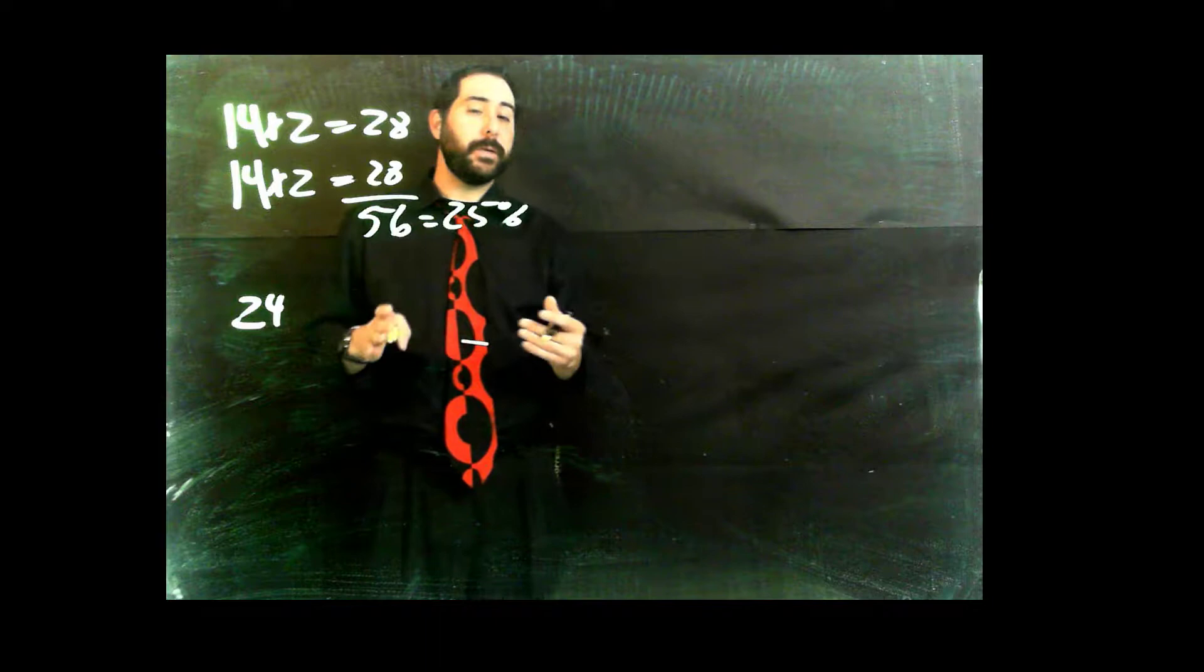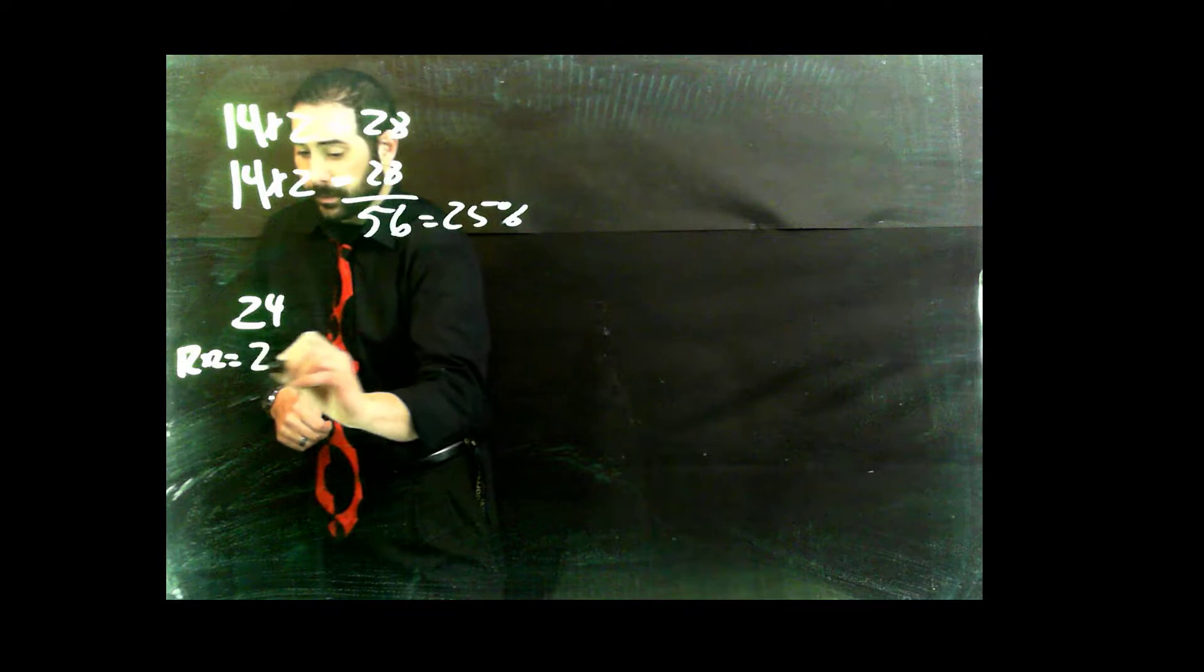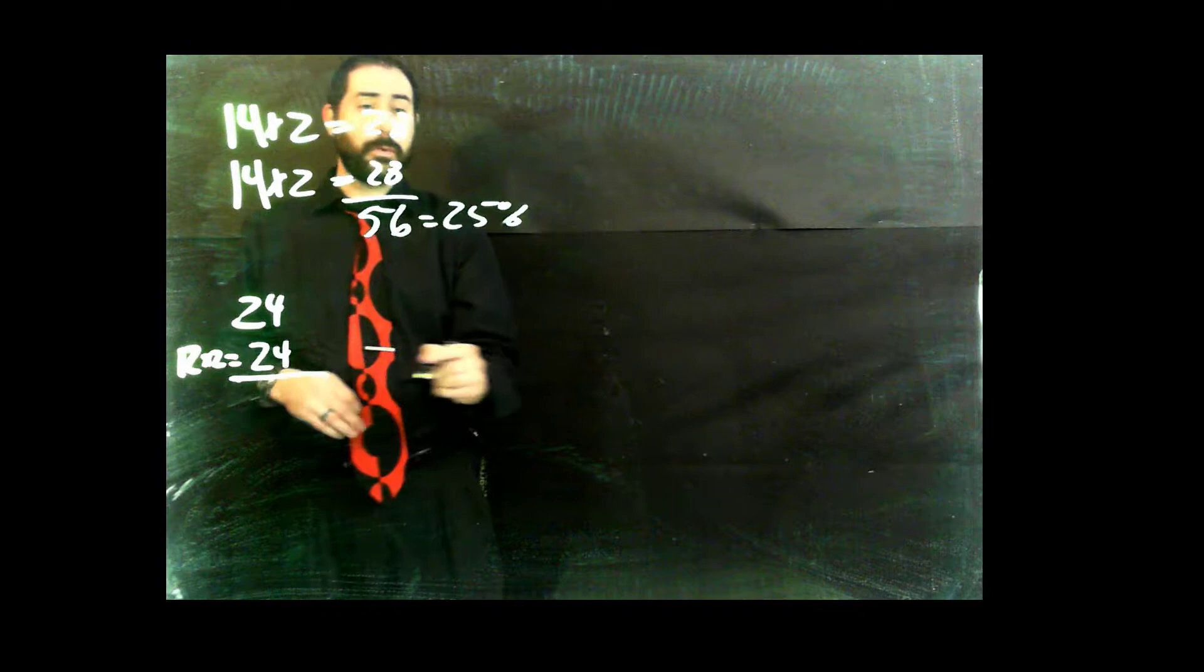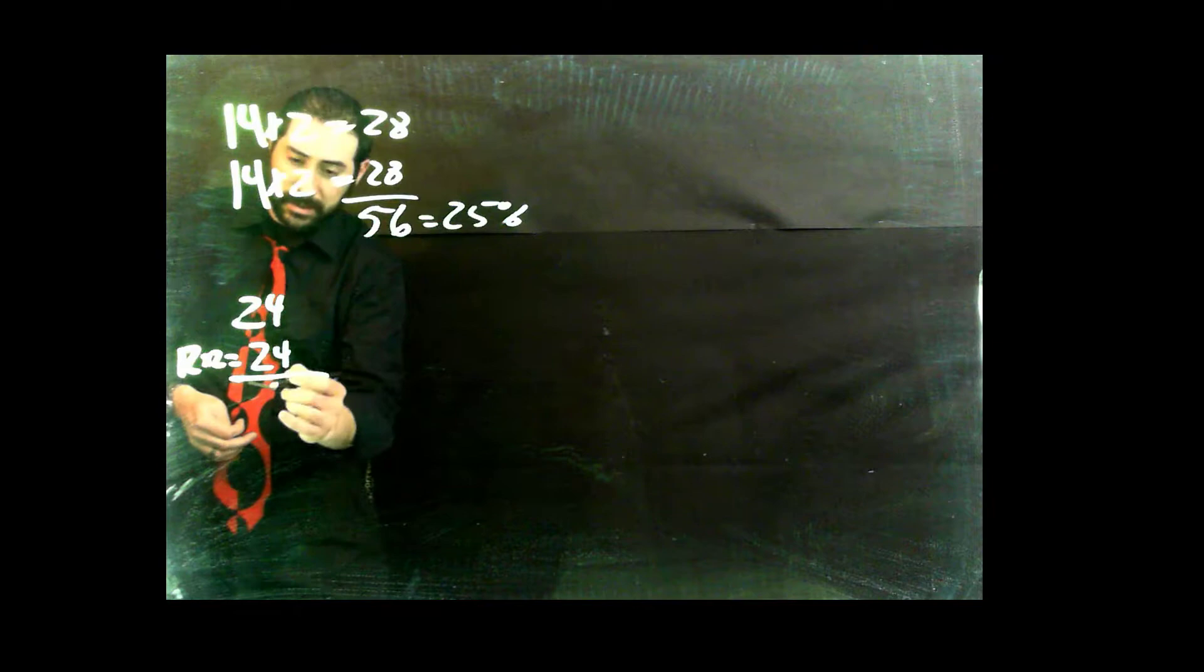And ribs are typically paired, which means we have two. So we have 12 vertebrae, we're going to multiply that by 2, which equals 24. So we have 24 ribs total. So if we take our 24 ribs and our 24 vertebral segments, then what we're going to end up with is a nice whopping 48.